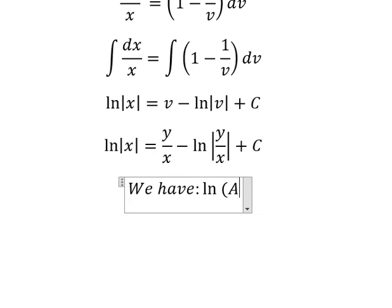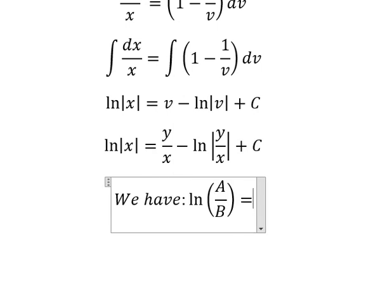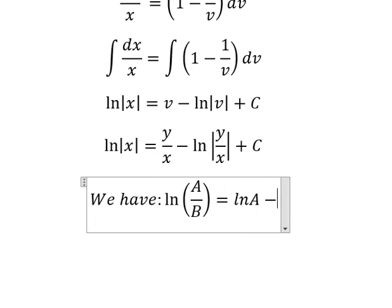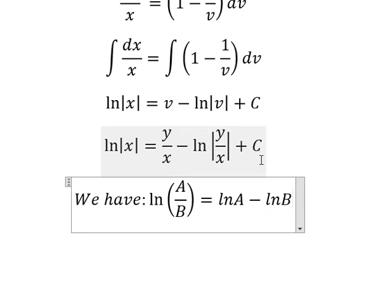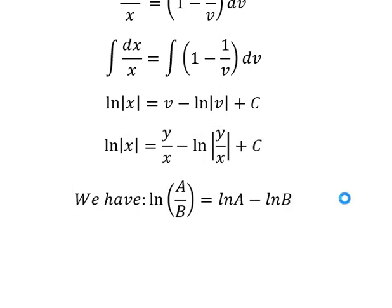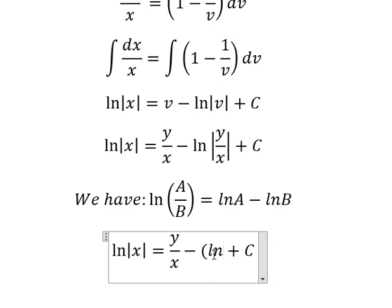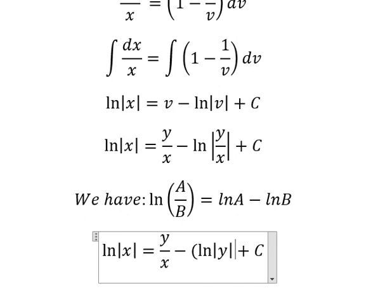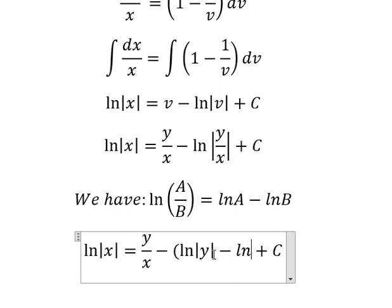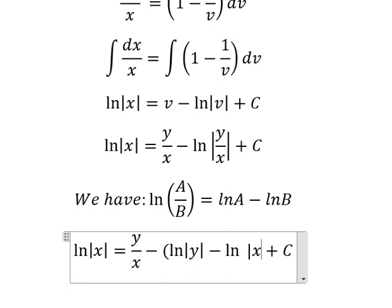ln(A/B) = ln A - ln B. So for this one we have ln of the absolute value of y minus ln of the absolute value of x.